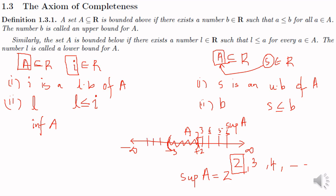For the open interval A = (minus 3, 2): any number less than minus 3 is a lower bound of A — for example, minus 4, minus 5, minus 6, and so on. Minus 3 is also a lower bound because all elements in A are greater than or equal to minus 3. So the lower bounds are minus 3, minus 4, minus 5, minus 6, etc. The greatest among them is minus 3. Therefore, the infimum of the set A is minus 3.